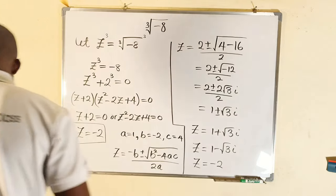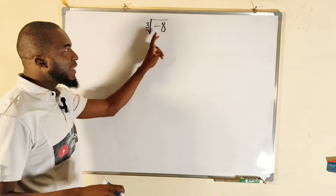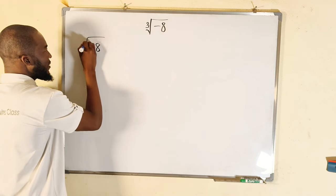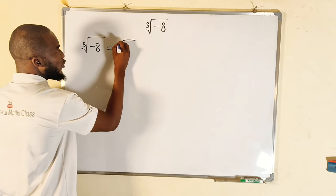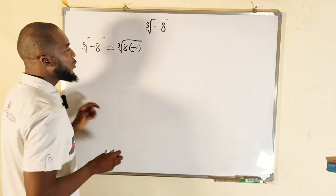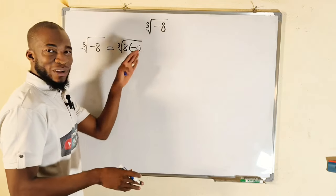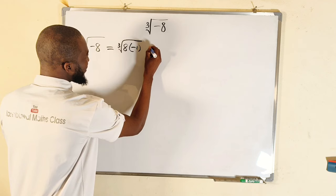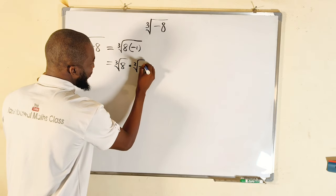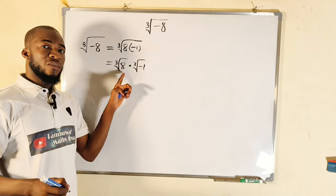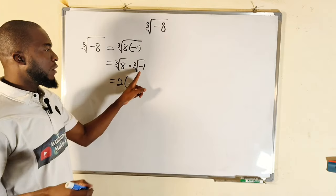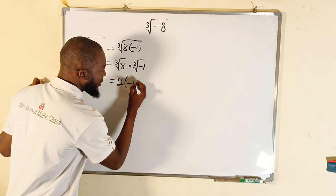In the second method, I know that negative eight is the same as eight multiplied by negative one. So the cube root of negative eight can be written as the cube root of eight times negative one. By the rules of radicals, we can split this as cube root of eight times cube root of negative one. The cube root of eight is two, so this equals two times the cube root of negative one.